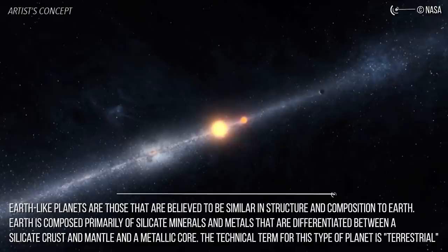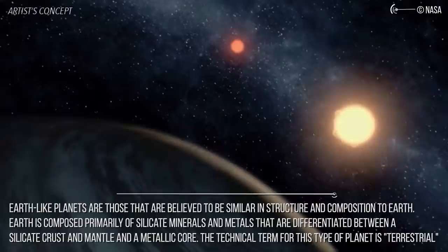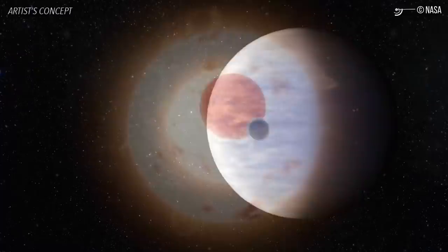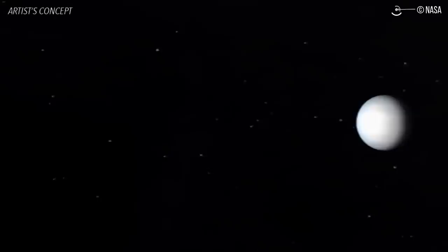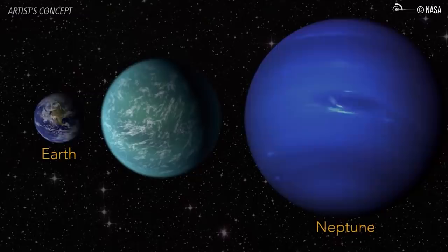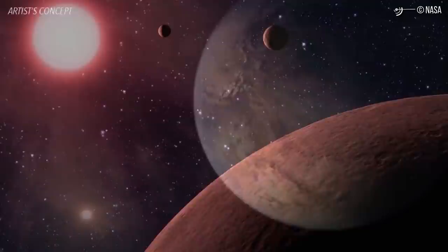The technical term for this type of planet is terrestrial, though astronomers often use the term rocky to differentiate them from gas giants, which are primarily composed of hydrogen and helium with some heavier elements concentrated in the core. Beyond structure and composition, Earth-like is also meant to imply that a planet has conditions similar to that of Earth. This would include the presence of a thick atmosphere and liquid water on its surface.